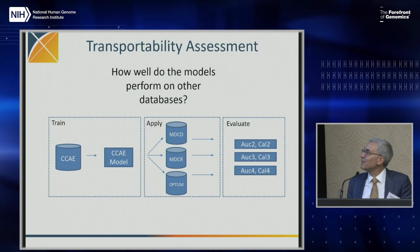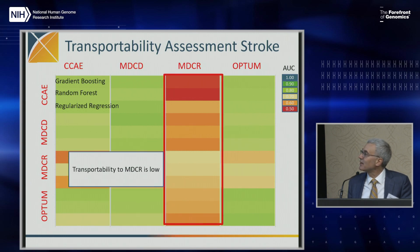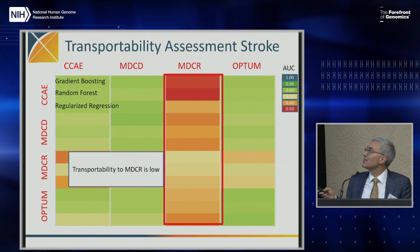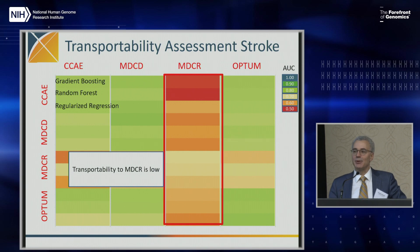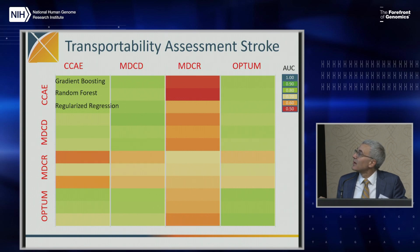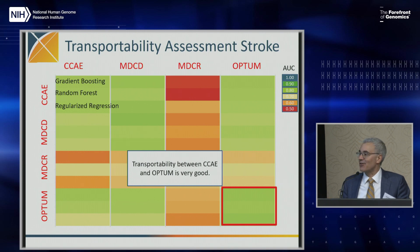We can also compare transportability across databases — building the model in one database and testing it in another. Transportability to Medicare is the worst, which makes sense: if you're coming from a general population database, you haven't optimized on an elderly population. Whereas between CCAE and Optum, which are both private payer general population databases, the prediction works well regardless of which database the algorithm was trained on.